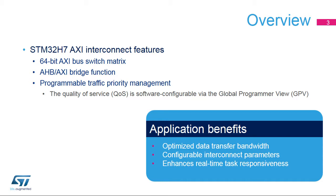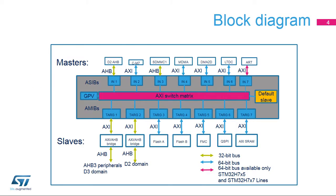The interconnect is also software configurable via GPV. The STM32H7 AXI Interconnect is shown in this figure. The interconnect has 7 initiator ports, or ASIBs (AMBA Slave Interface Blocks), for the dual-core version, and 6 initiator ports for the single-core version. Both versions have 7 target ports, or AMIBs, AMBA Master Interface Blocks.